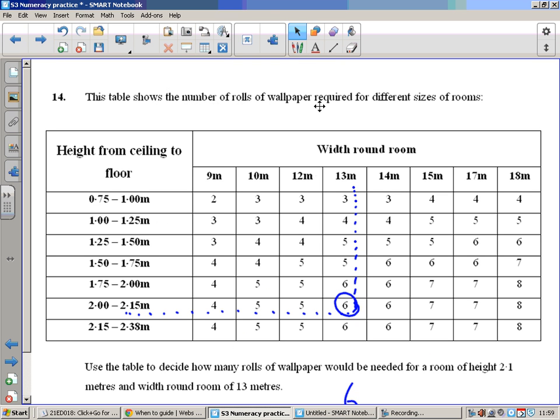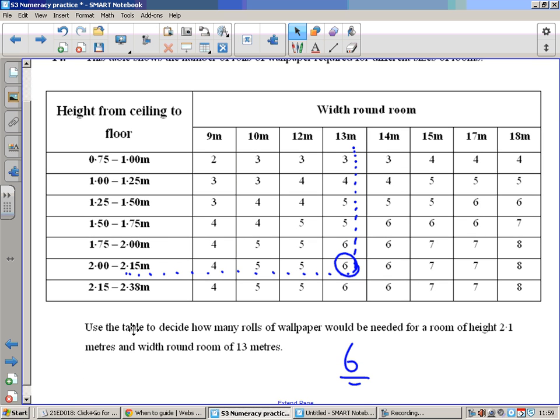The table shows the number of rolls of wallpaper required for different sizes of rooms. Use the table to decide how many rolls of wallpaper would be needed for a room height of 2.1 meters, so that would fall into this part here, between 2 and 2 meters 15, and a width around the room of 13 meters. So just have a look at the table where these two meet. That tells us how many rolls of wallpaper we need: to be 6.